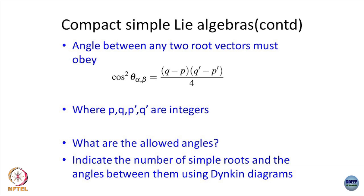This puts a lot of constraints — you cannot have any arbitrary Lie algebras. You have to have a Lie algebra with the root vectors satisfying this condition; that is why you can determine what the allowed angles are. Please go and check what the allowed angles are using this: theta equal to 0 is trivial, 180 is fine, but you can get 120. Can you get some other arbitrary angle like 10 degrees or 15 degrees? You can check it out. You will find only a specific list of allowed angles — not everything.